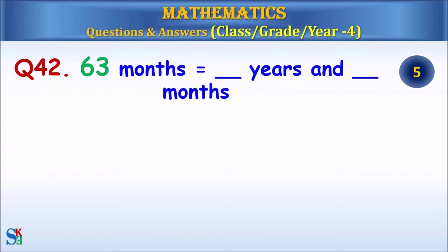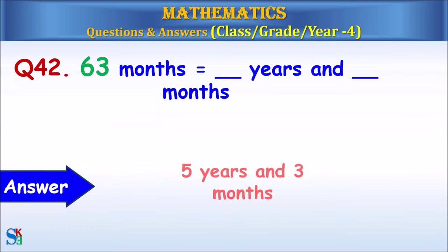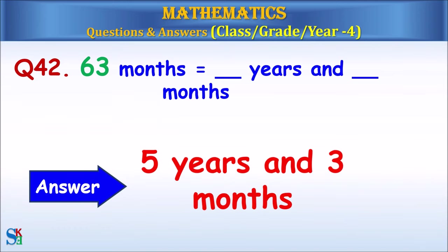Question 42: 63 months is equal to how many years and how many months? The answer is 5 years and 3 months.